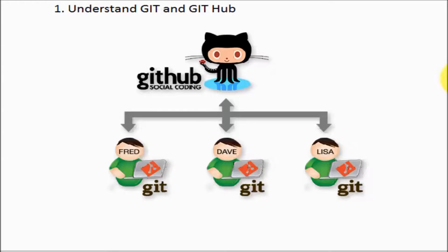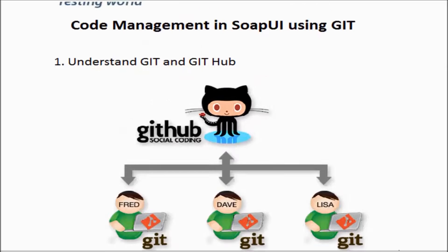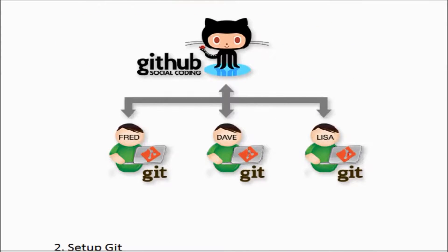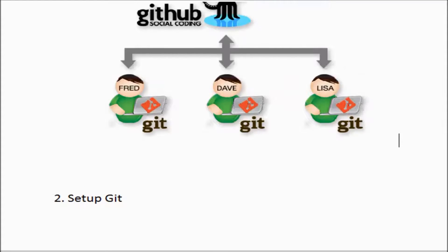So we now have the understanding of what Git and GitHub are. Git is a software installed on each and every individual machine, and GitHub is a centralized repository. Next we need to set up Git, because first we need to set it up on each machine, then we need to create a GitHub repository. I will show you the complete process.